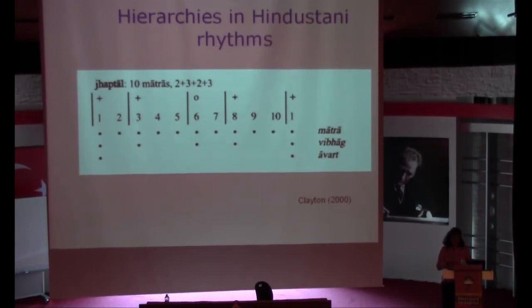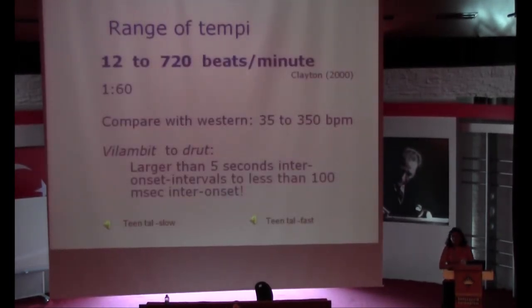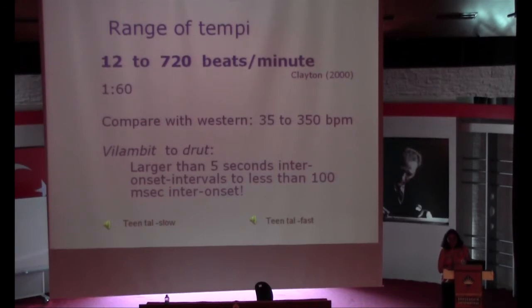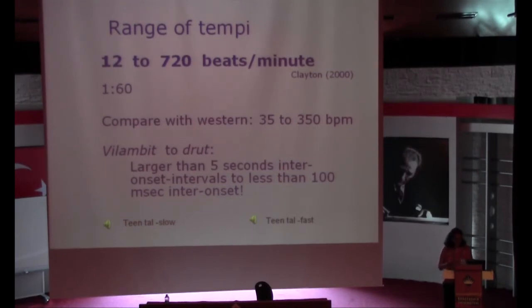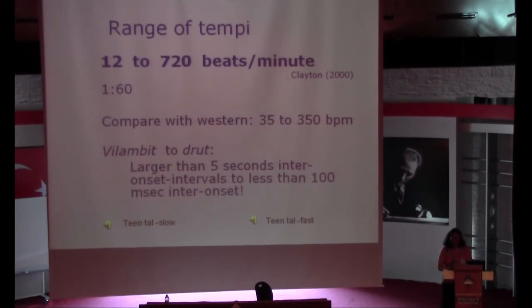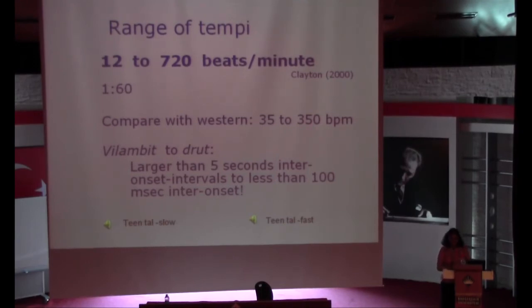The range of tempos — the laya — in Indian music is quite extreme: from 12 beats a minute to 720 beats a minute. Neurophysiologists and sensory-motor theorists are baffled by this, because it is very difficult to hold a rhythm in your head if two beats are more than five seconds apart. At the high range, especially for instrumental music, you're playing more than 10 notes per second. That's a ratio of more than 60 compared with standard Western music, which is more like a ratio of 10.